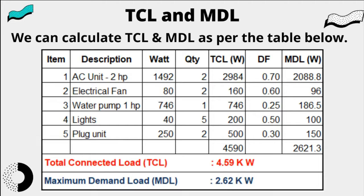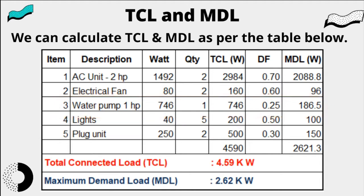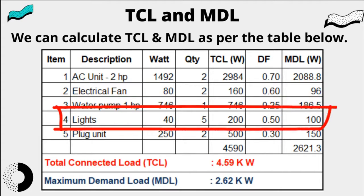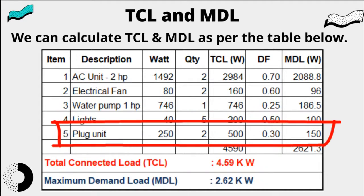Although the TCL is 746 watts, the MDL of the water pump is 186.5 watts because the DF is 0.25. The total load of the five lights is 200 watts and the MDL is 100 watts as the DF is 0.50. The TCL of the two plug units is 500 watts but the DF is only 0.30, so the MDL is 150 watts.